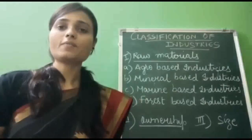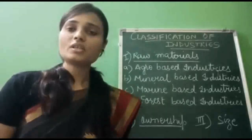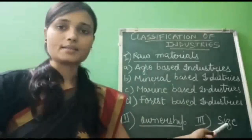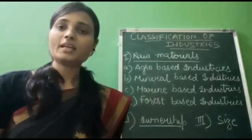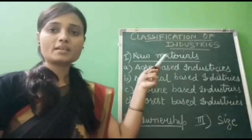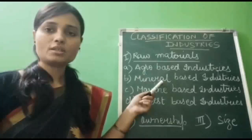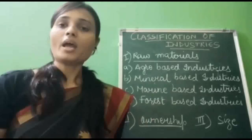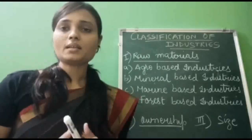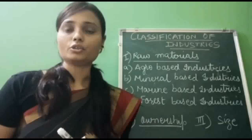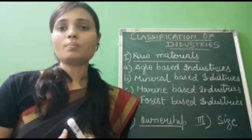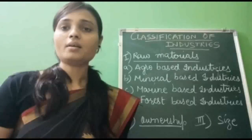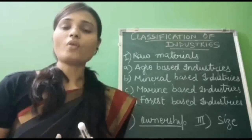Our next topic is classification of industries. Industries can be classified on the basis of raw materials, ownership, and size. On the basis of raw materials, industry can be classified as agro-based industry, mineral-based industries, marine-based industries, and forest-based industries. Agro-based industries obtain raw material from agriculture, that is plants and animal-based products. For example, food processing, vegetable oil, cotton textile, and sugar are examples of agro-based industries.